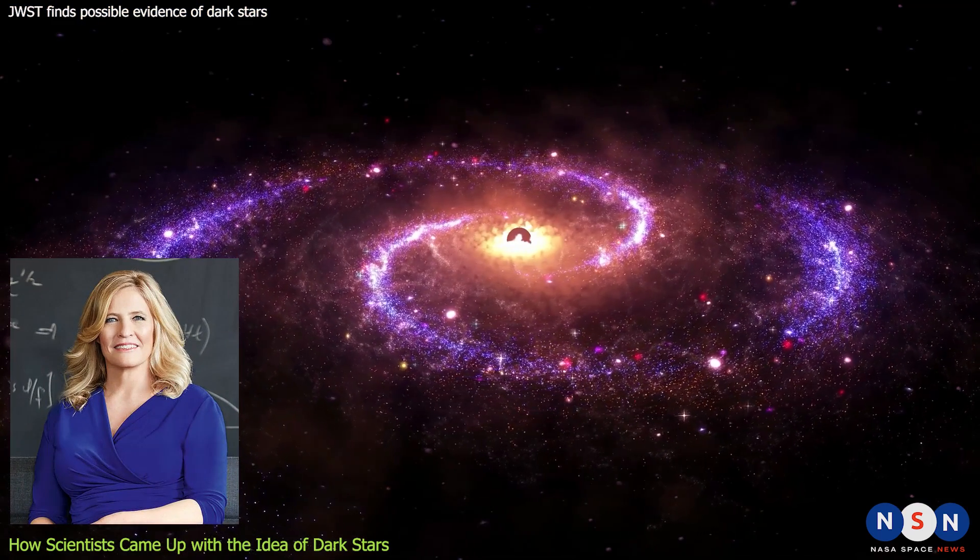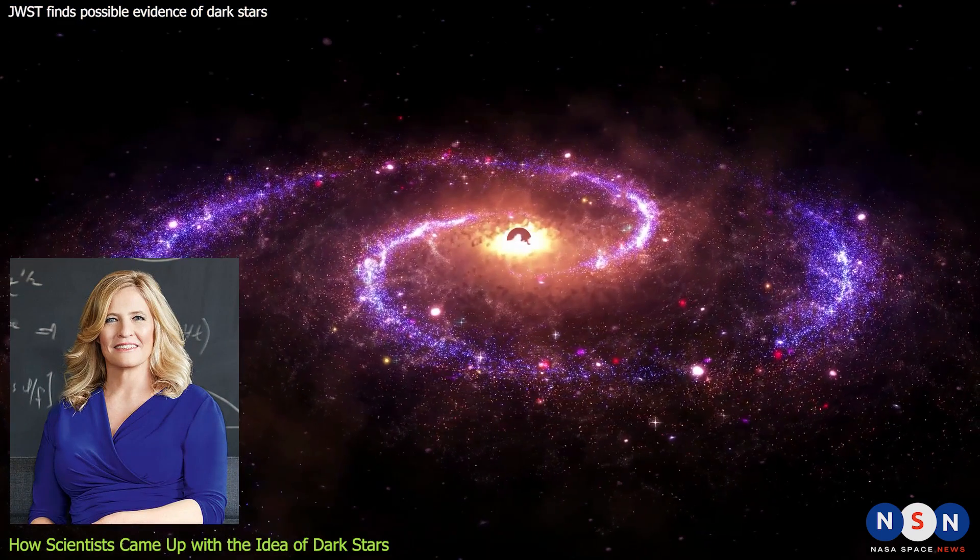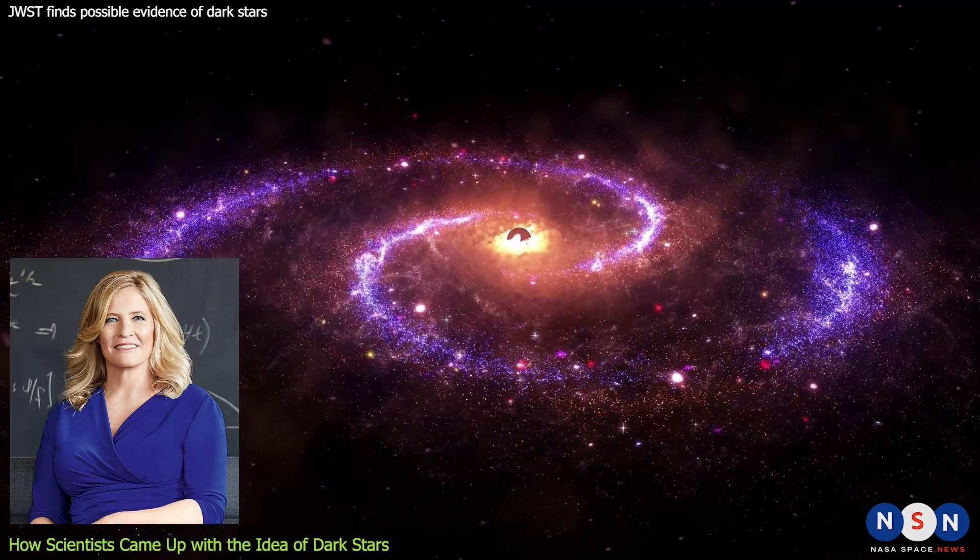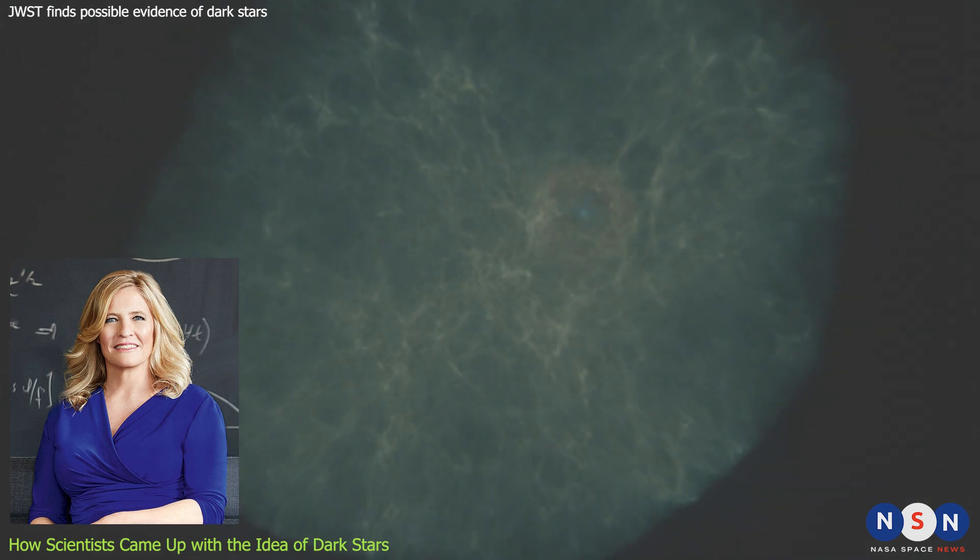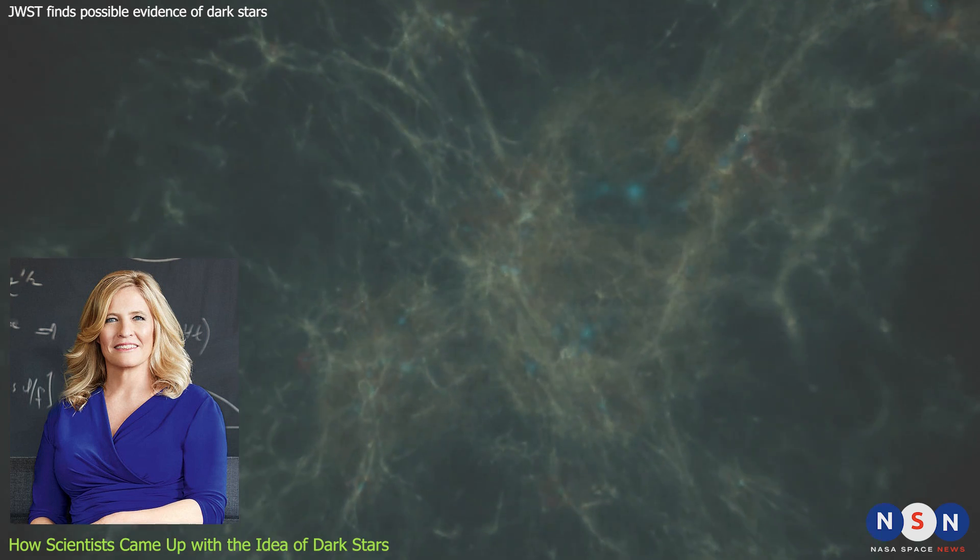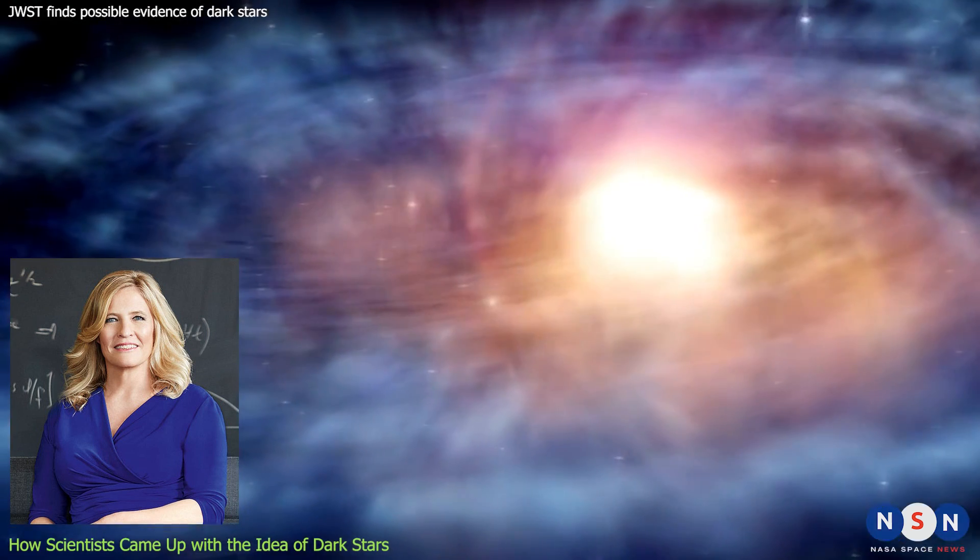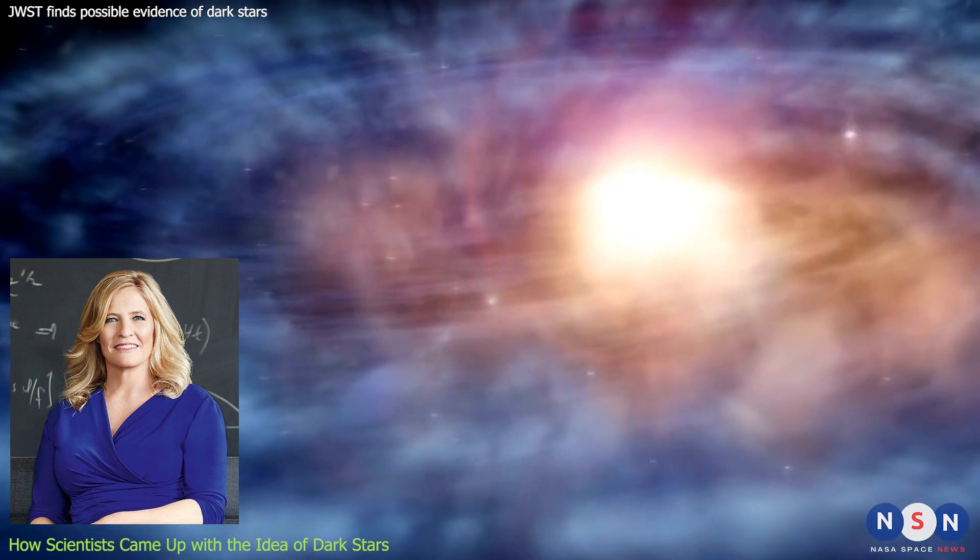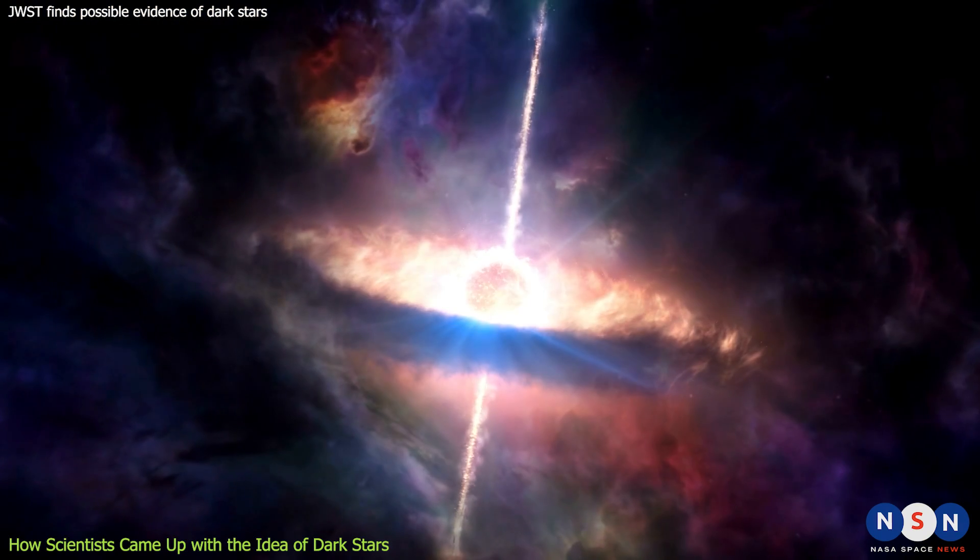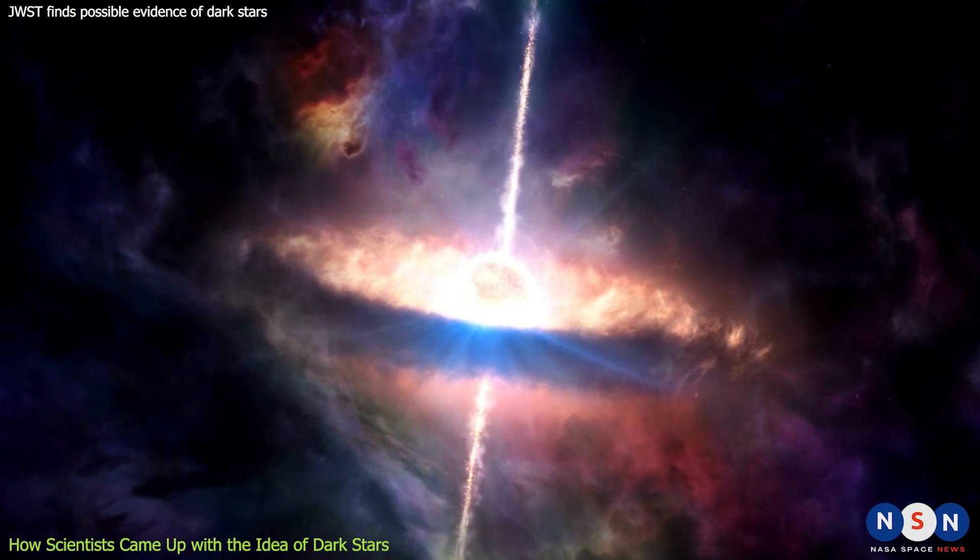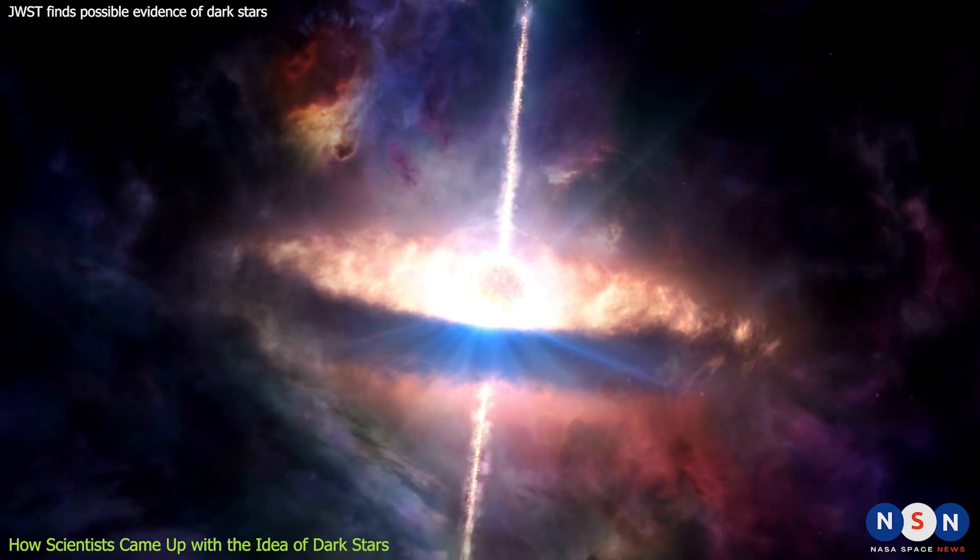Fries and her colleagues suggested that dark matter could accumulate in the cores of very massive stars in the early universe, when dark matter was more abundant and dense than today. There, it could interact with itself and produce energetic particles that would heat up the star and prevent it from collapsing under its own weight. This would create a new kind of star that would shine for billions of years, much longer than ordinary stars.